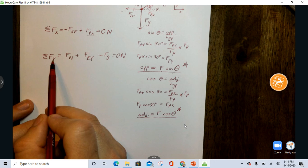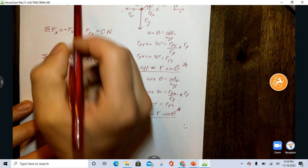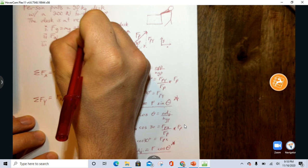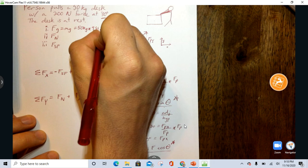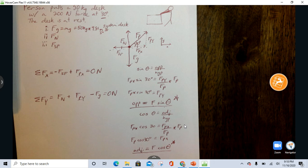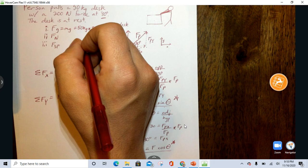So, I'm actually going to start with this, because it's going to give us more useful information. I can hop up here, and I already know FG is always going to be equal to MG, which is going to be equal to 50 kilograms times 9.81 meters per second squared. And I get that the force of gravity is 490.5 newtons.